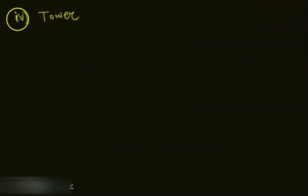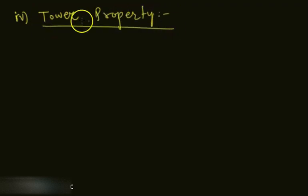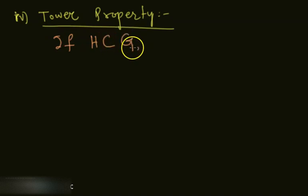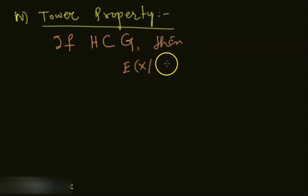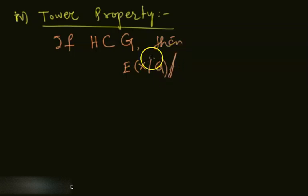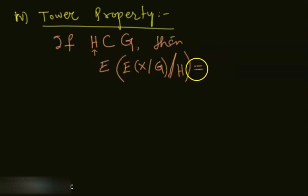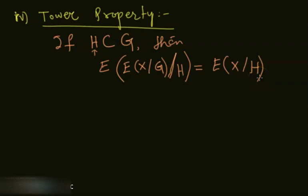Property five is the tower property. If H is a sigma field with H ⊆ G, then E[E[X|G] | H] = E[X|H]. Since E[X|G] is a random variable, it can be conditioned on the smaller sigma field H, and the result is simply E[X|H].